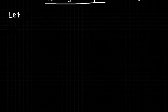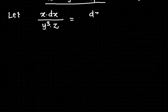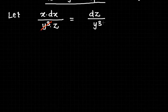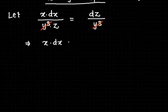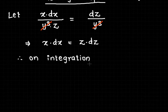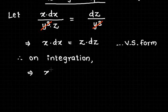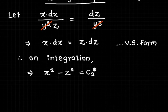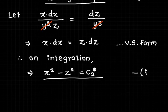Taking the ratio dx/(y³·z) = dz/y³. After cancelling y³ from both sides, we rewrite it as x dx = z dz. On integration of both sides, we get x²/2 − z²/2 = c₂*, which is the second required solution.